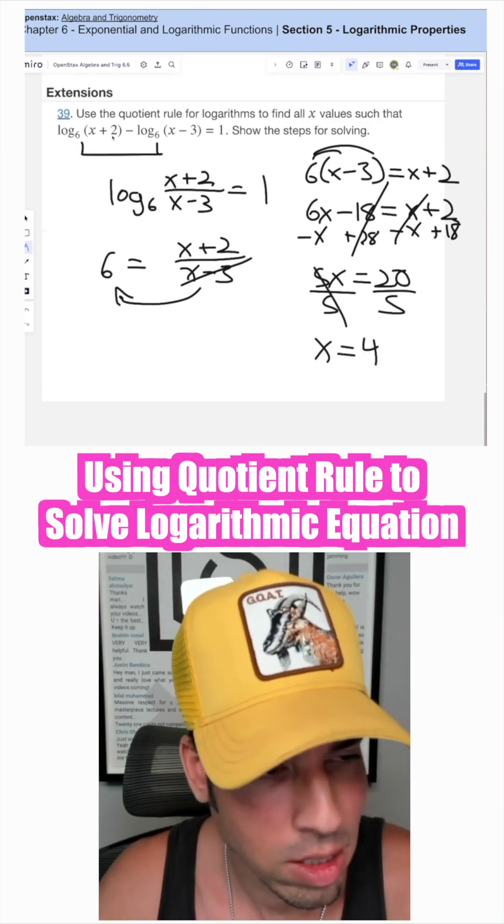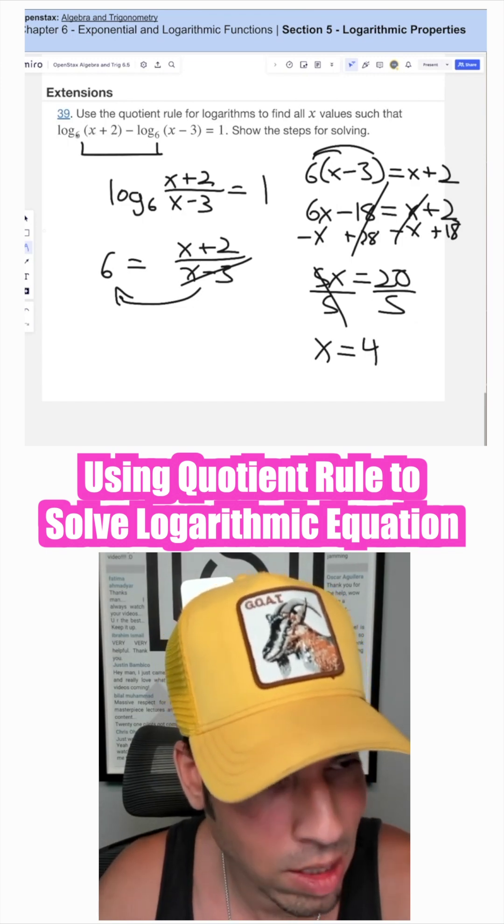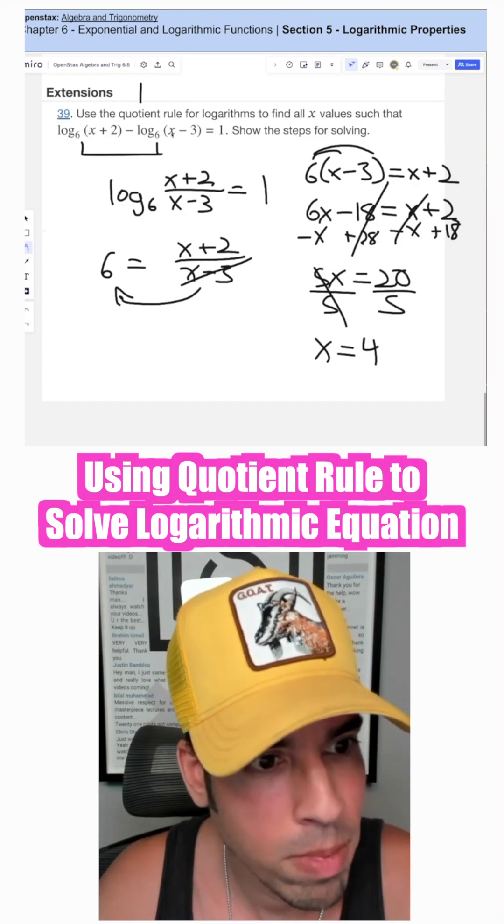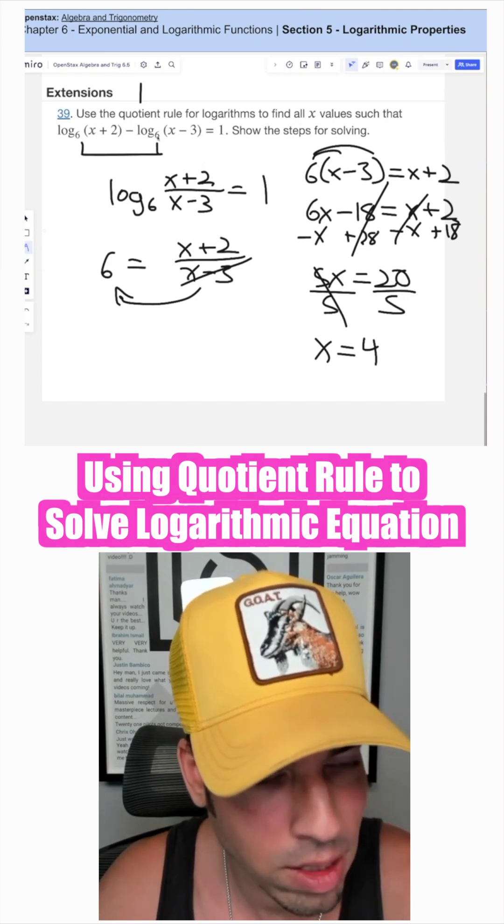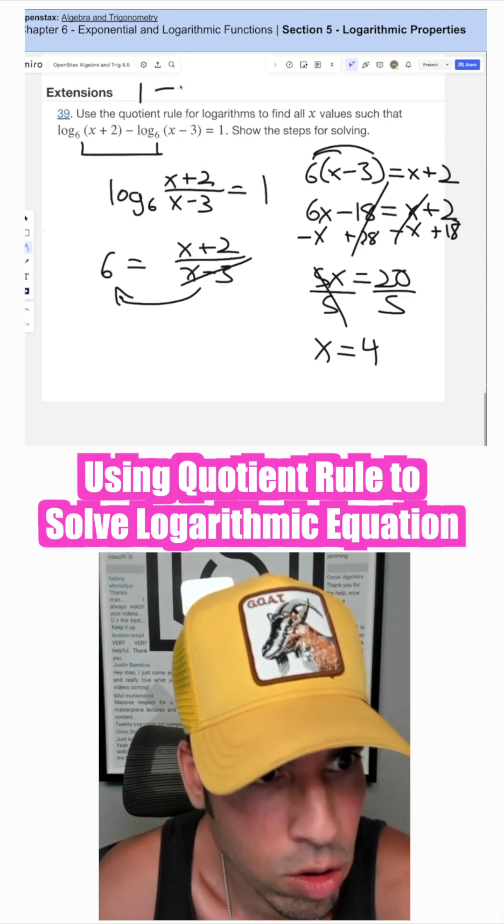Four plus two is six, log base six of six is one. Four minus three is one, log base six of one, or log base anything of one, is zero. So one minus zero indeed equals one.